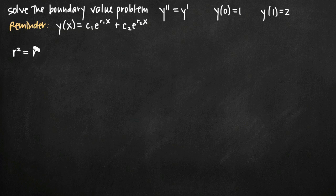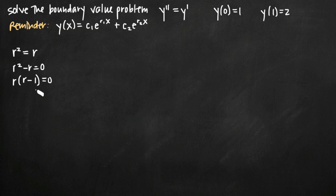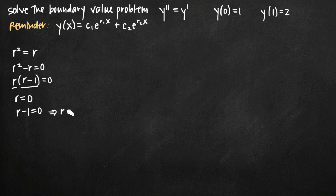Now we need to solve this for the roots of the equation. We subtract r from both sides to get r squared minus r equals 0, then factor the left-hand side. Factoring out an r gives us r times (r minus 1) equals 0. Setting each factor equal to zero, the first factor gives r equals 0, and the second factor gives r equals 1. These are the two roots of our second order differential equation, and we notice right away that they are distinct real roots.